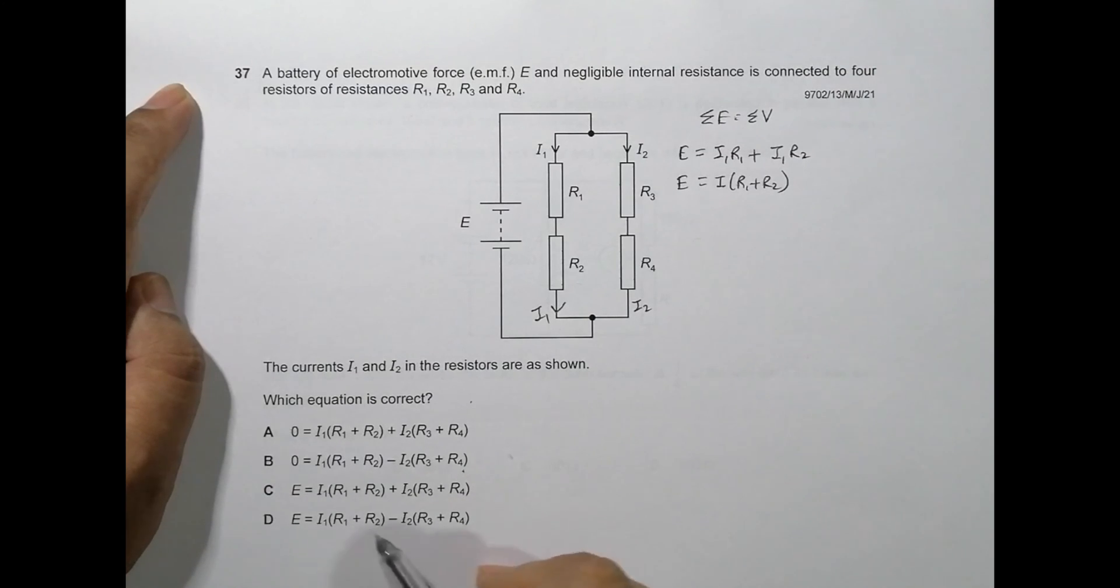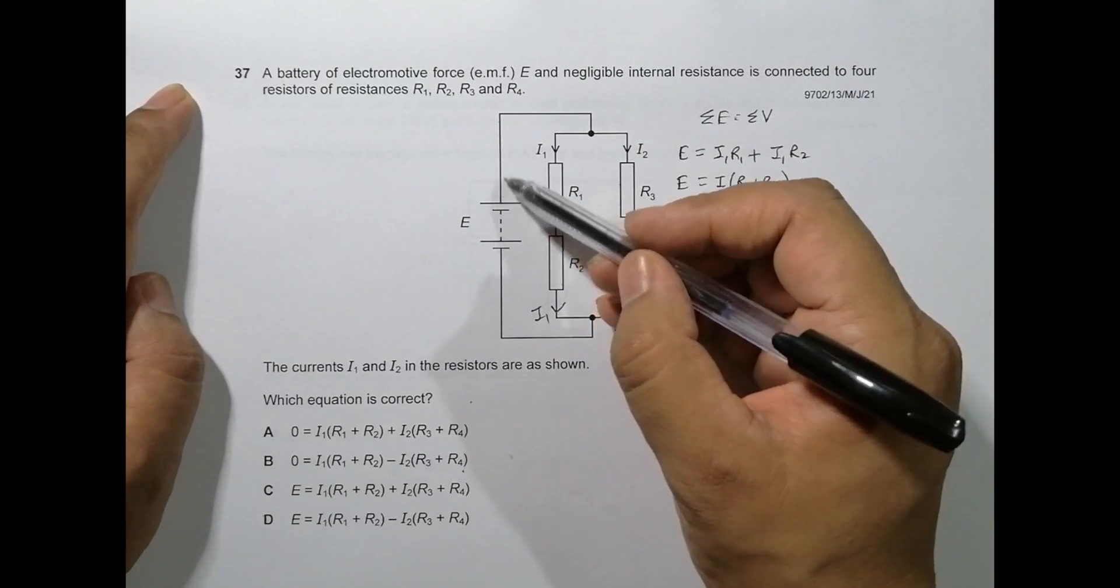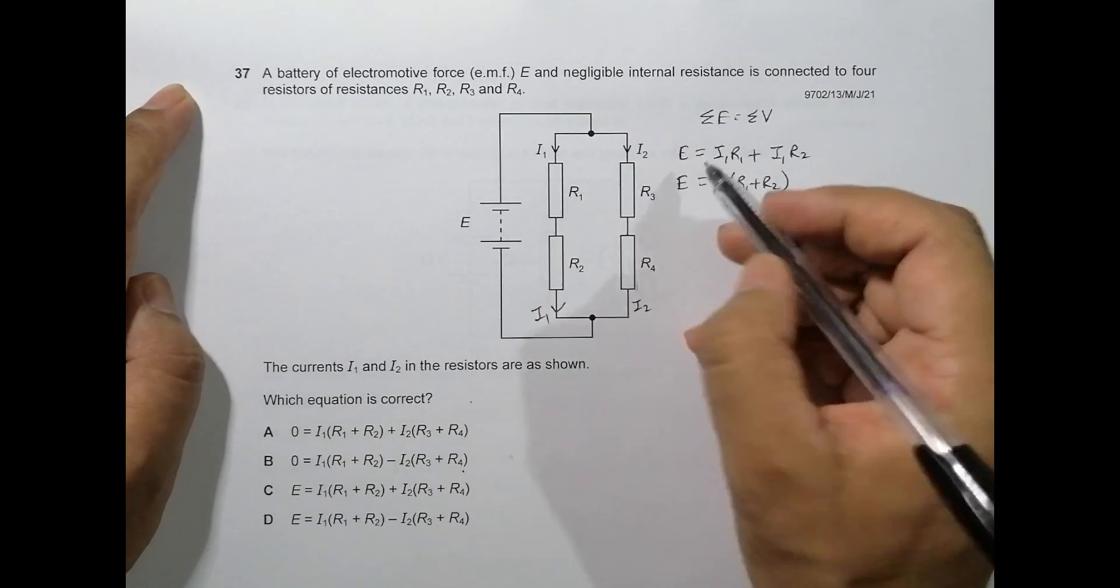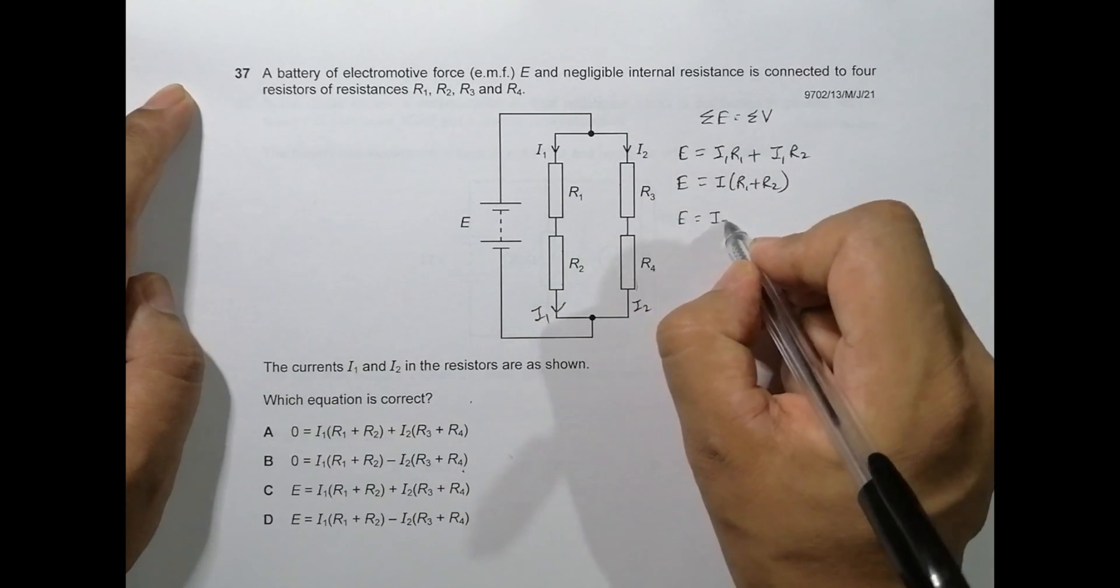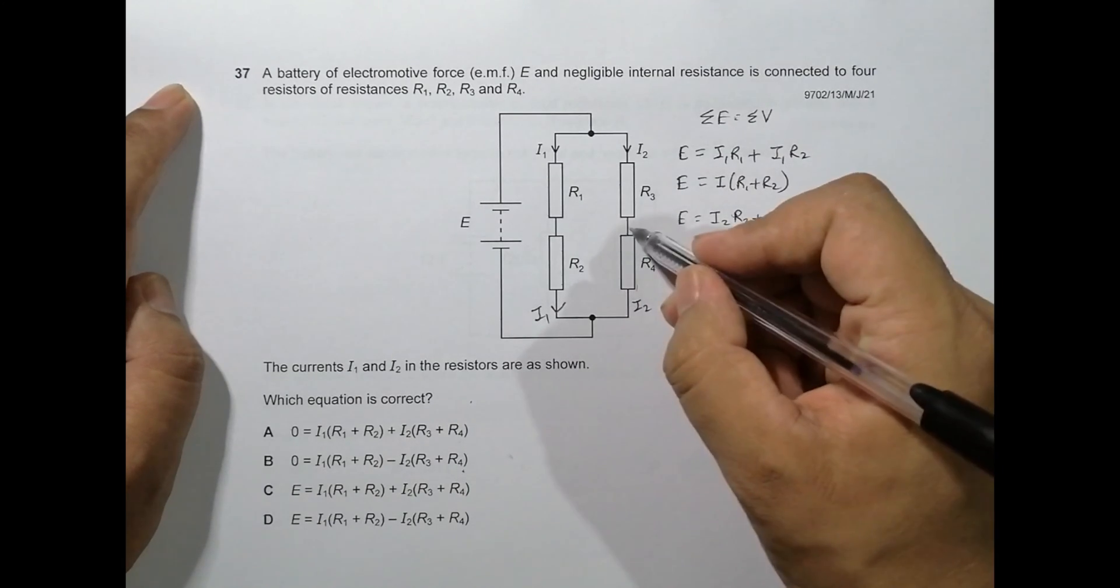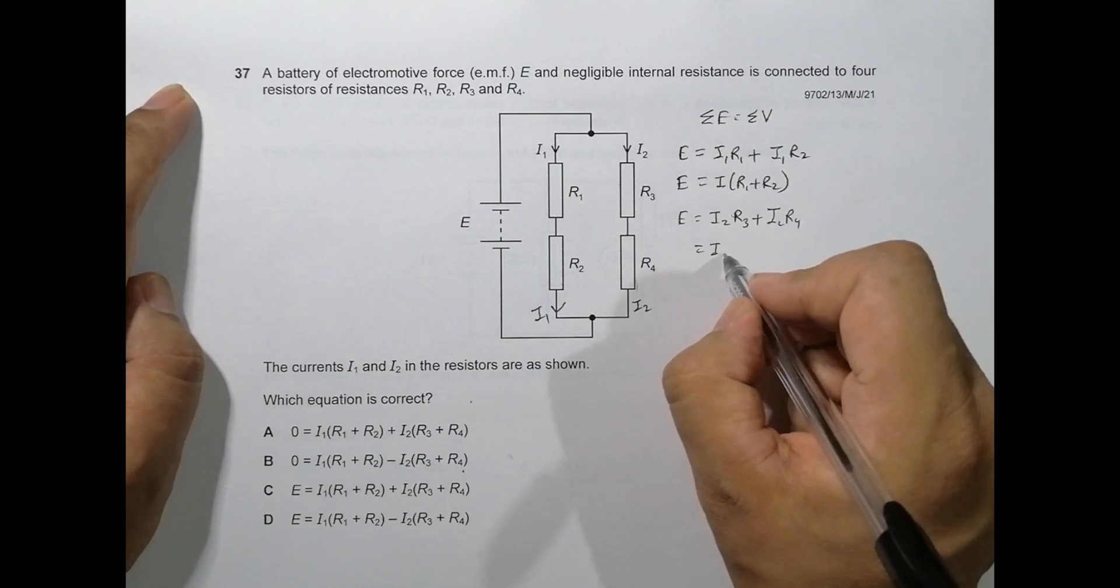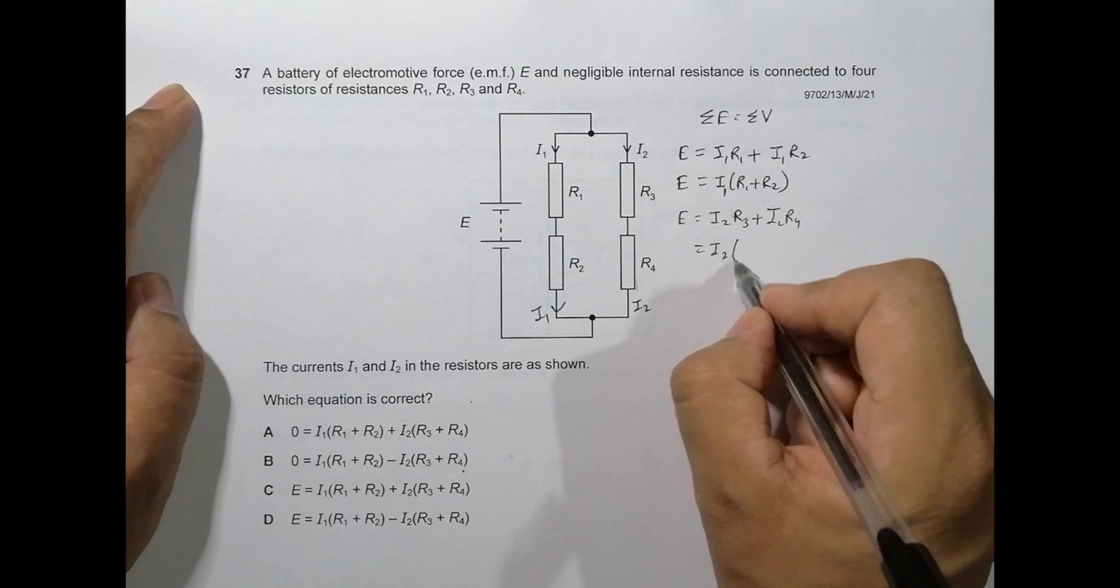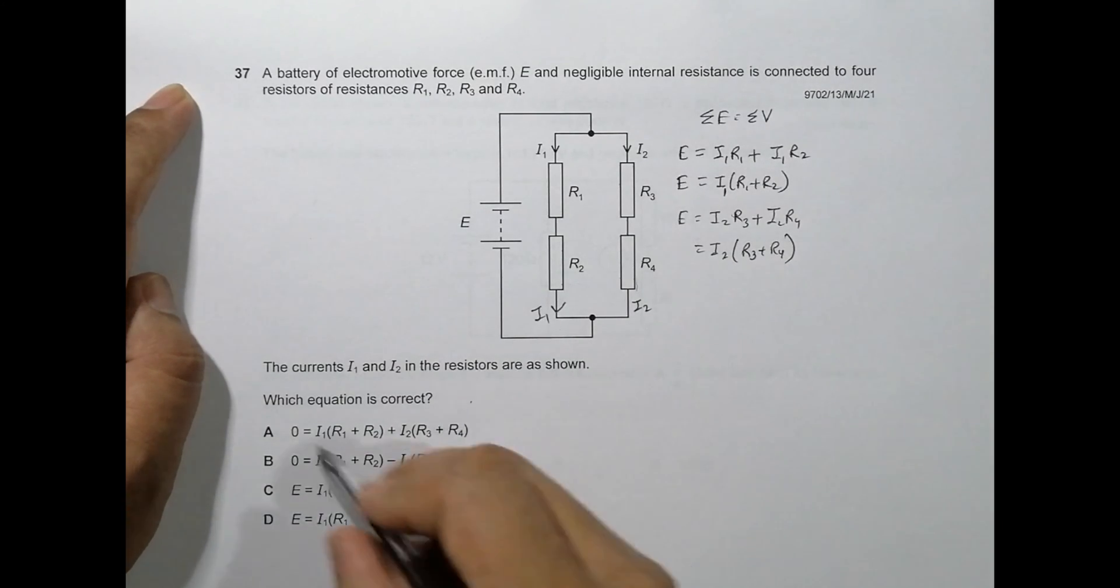Another equation could be this loop. From here it goes like this, like this, like this. So it should be E is equal to I2·R3 plus I2·R4. It should be equal to I2(R3 + R4). This is also not available anywhere in the options.